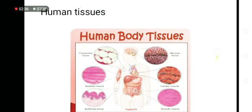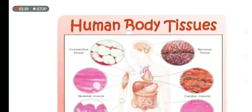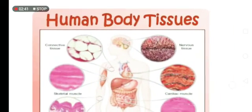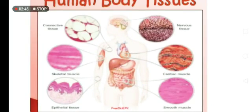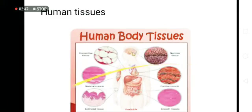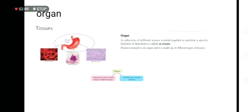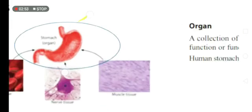These are human body tissues. They have the connective tissue, nervous tissue, skeletal muscle, cardiac muscle. Now we're going to learn about organ. In the list when we showed you about tissues, did you see stomach was also organ written?